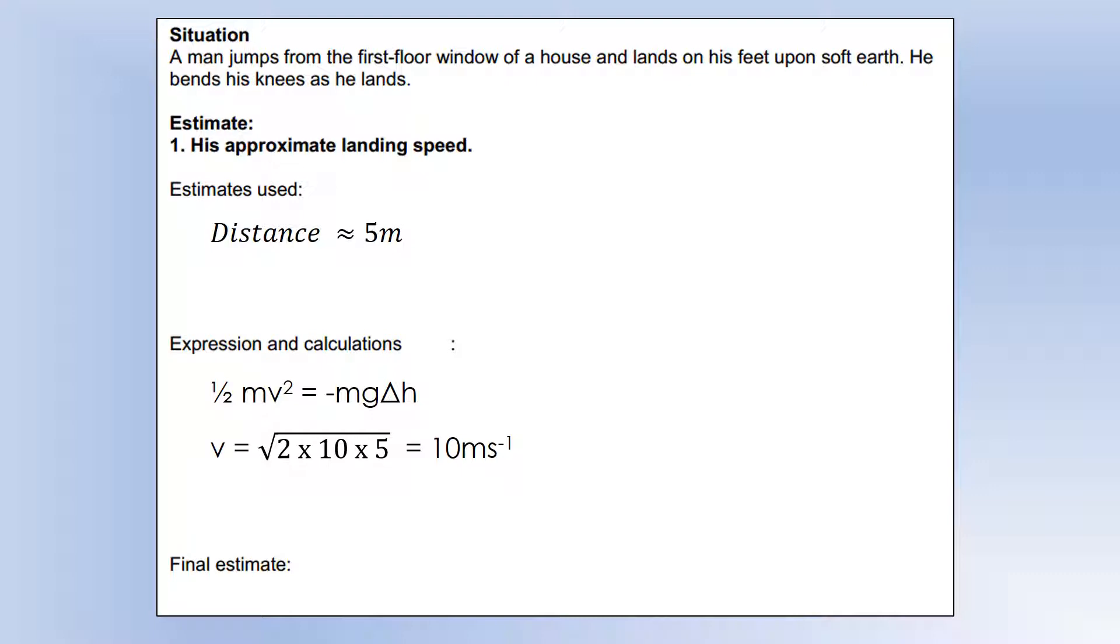So g is around 10, the height change is about 5, plug those numbers in, and we get square root of 100, which is 10, which is why I picked the distance as 5, to make that as easy as possible.